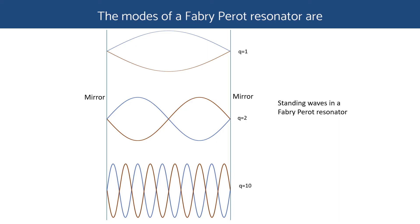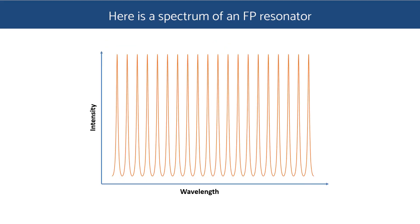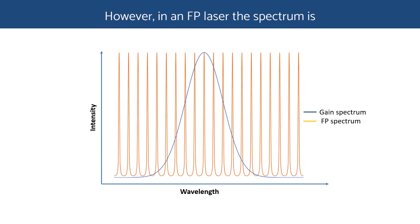The modes of a Fabry-Perot resonator are best represented by the spectrum, a plot of intensity versus wavelength. Here is a spectrum of a Fabry-Perot resonator with a large number of resonant peaks. Billions of such peaks are possible in an ideal Fabry-Perot resonator.